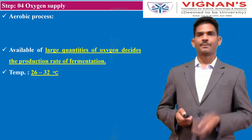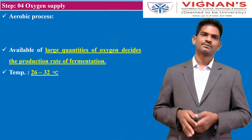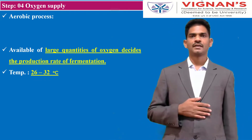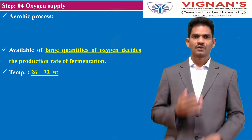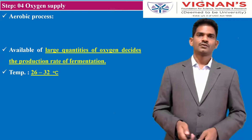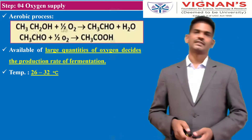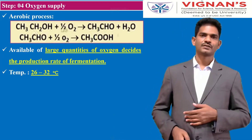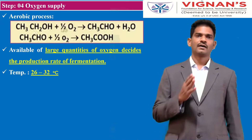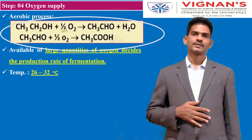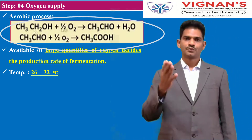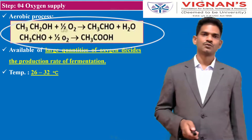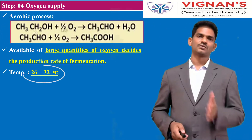Step four is oxygen supply. Acetic acid production is an aerobic process, so during fermentation we need to supply oxygen. High aeration is very much essential to get a good quality product. During the aerobic fermentation process, ethanol is oxidized to produce acetaldehyde, which undergoes again oxidation to produce acetic acid. The preferred temperature range during this process is 26 to 32 degrees Celsius.